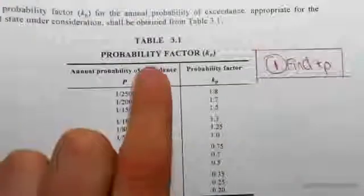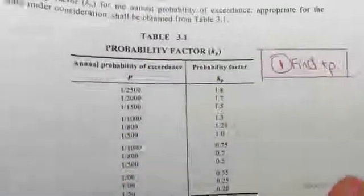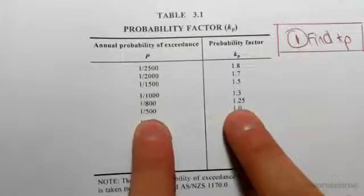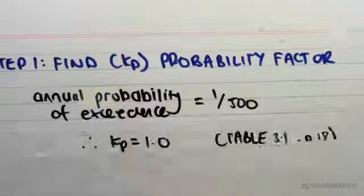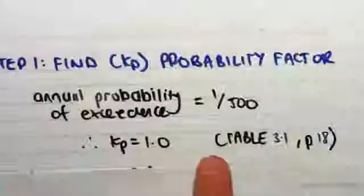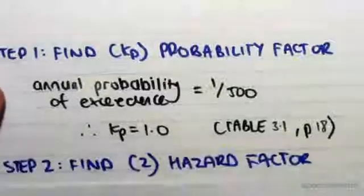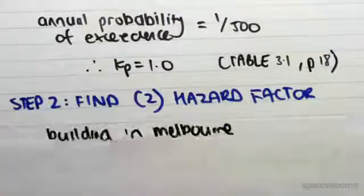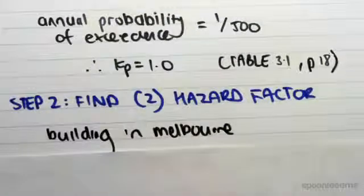We have probability factor kp, probability of exceedance one in 500 corresponds to a kp value of 1.0. So kp is 1.0 from table 3.1 on page 18-19. We can then find z, the hazard factor. The building is built in Melbourne.